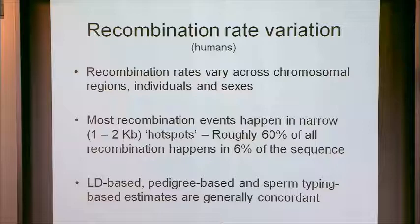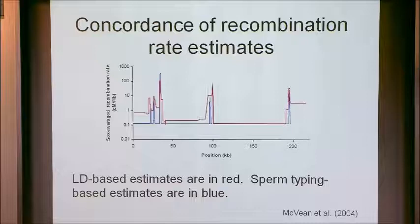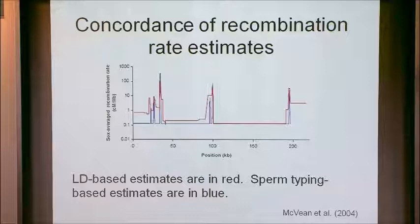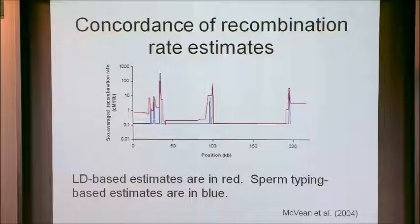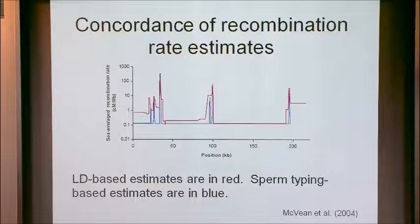The two different classes of methods for estimating recombination rates are generally concordant. Pedigree-based methods versus sperm typing versus linkage disequilibrium-based methods generally give the same answer. Here's an early study by Gil and colleagues, where they looked in the MHC region, estimated recombination using patterns of linkage disequilibrium — shown in red — and compared it with estimates from sperm typing in blue. Even though the y-axis is on a log scale, you can squint your eyes and they line up pretty well.